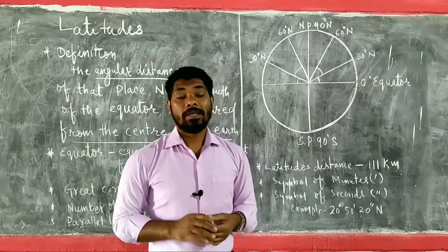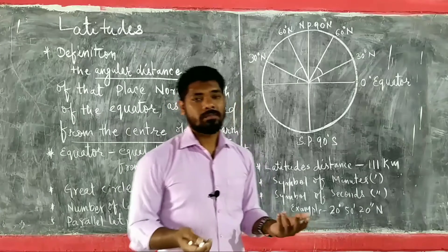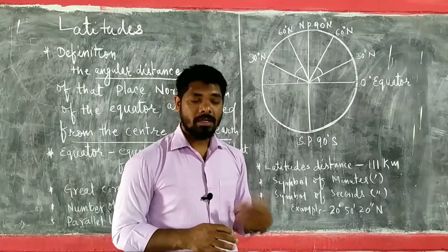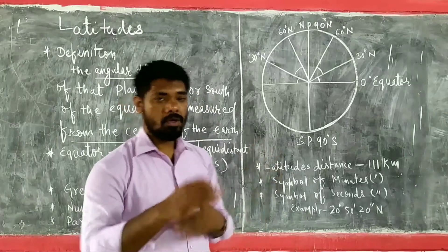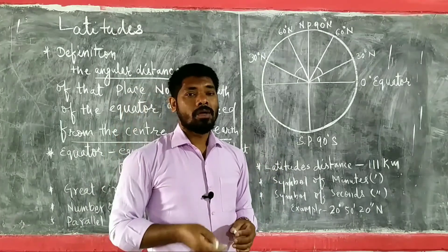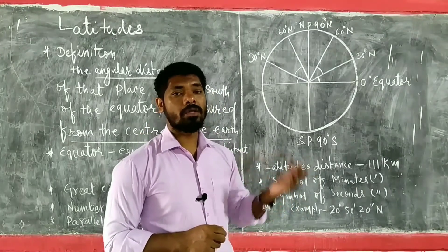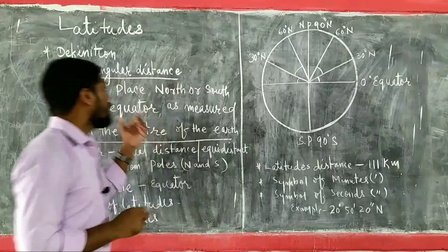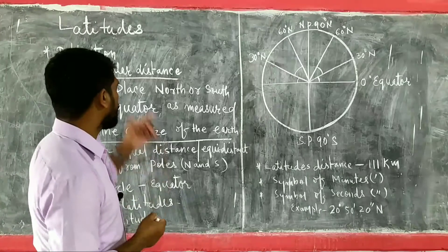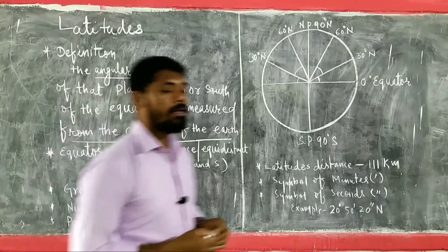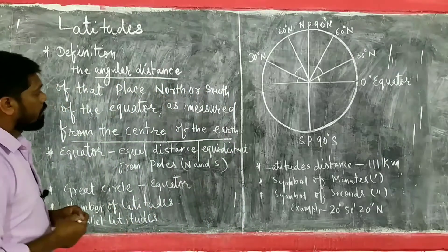You might have learned in simpler terms in earlier classes that latitudes are imaginary lines that run from west to east. But as you move to higher classes, the definition becomes more detailed to broaden your thinking. The complete definition is: latitude is the angular distance of a place north or south of the equator, measured from the center of the earth. I hope the definition is clear.